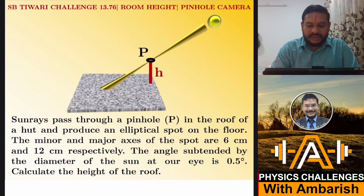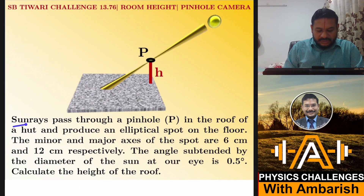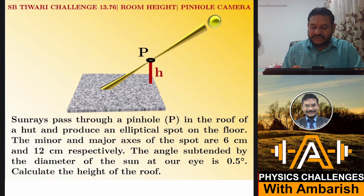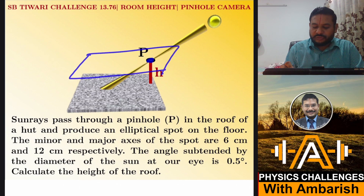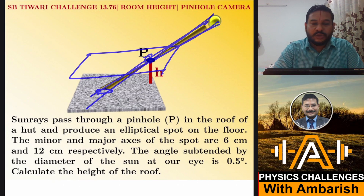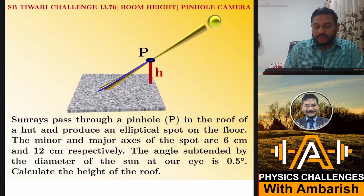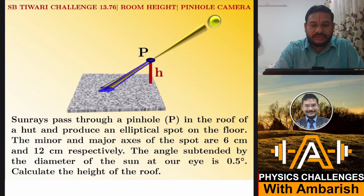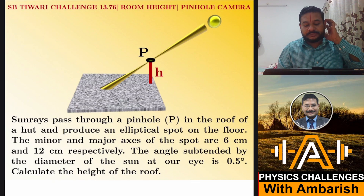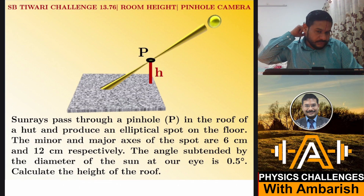Here is the problem statement. Sun rays pass through a pinhole P in the roof of a hut and produce an elliptical spot on the floor. I have not shown the roof, but you can imagine there will be some roof and there is a hole through which sun rays are entering. There will be a cone of rays entering through this pinhole and forming a cone again, with a spot at the bottom. The rays pass through pinhole P and produce the elliptical spot on the floor.